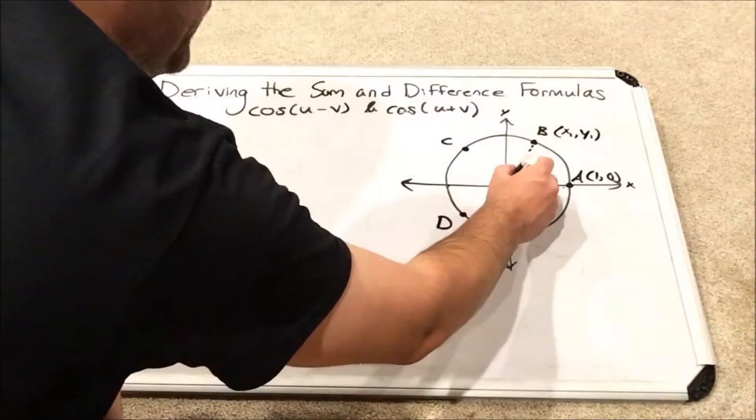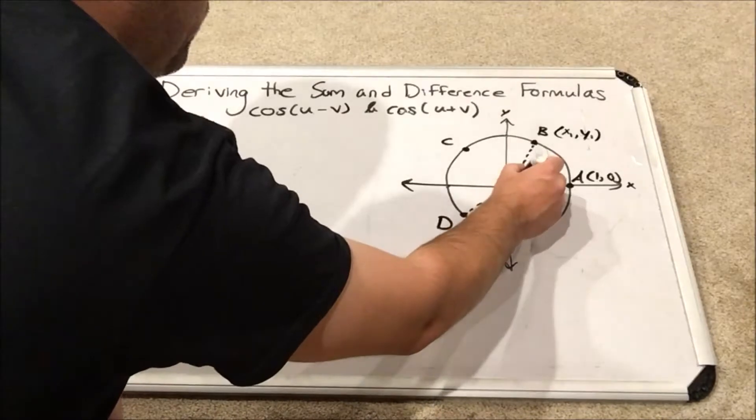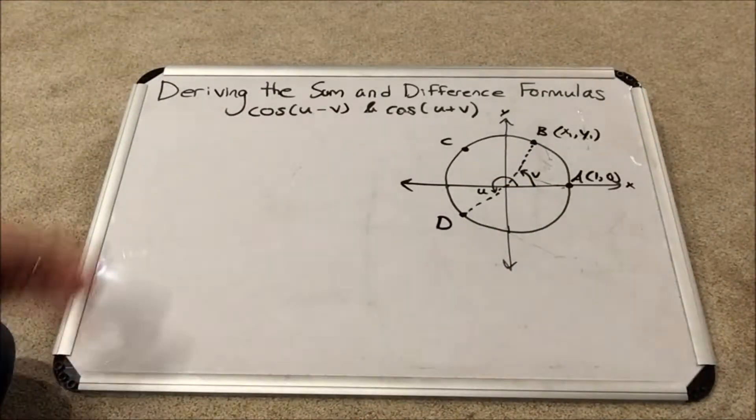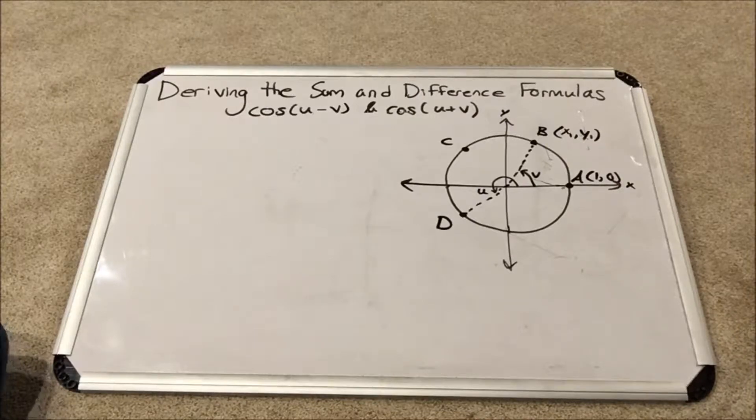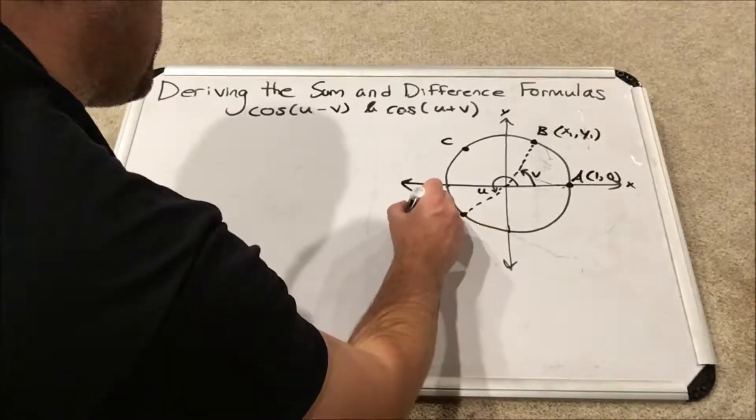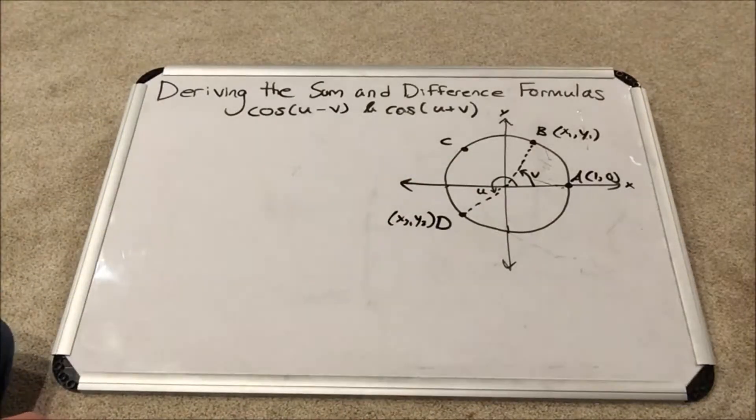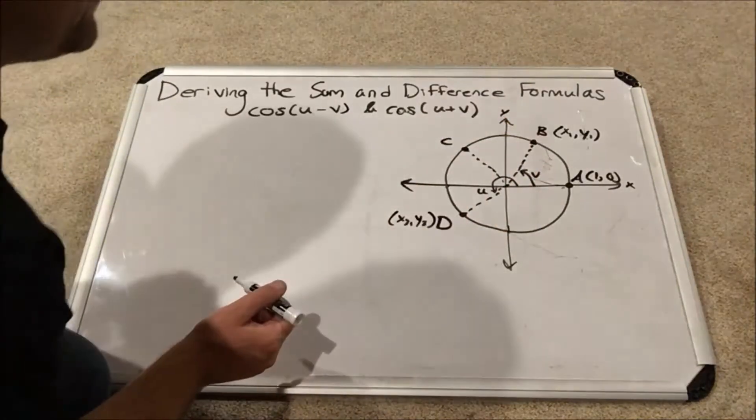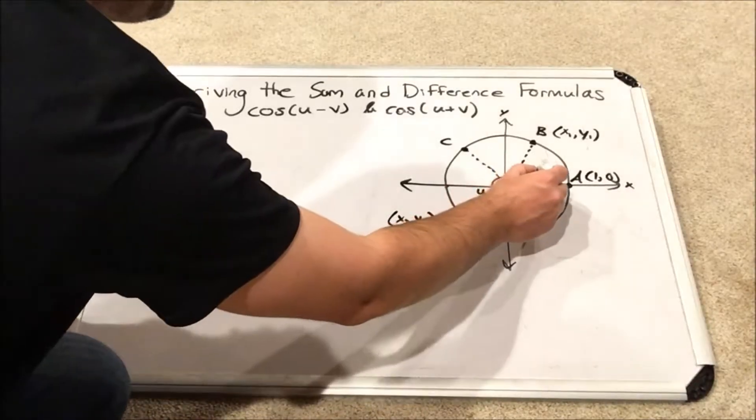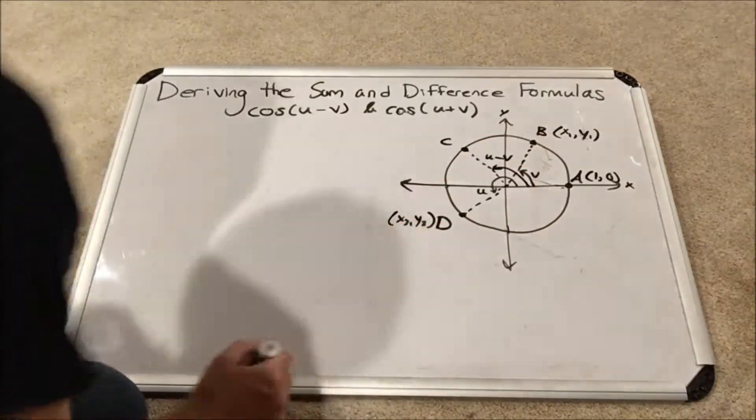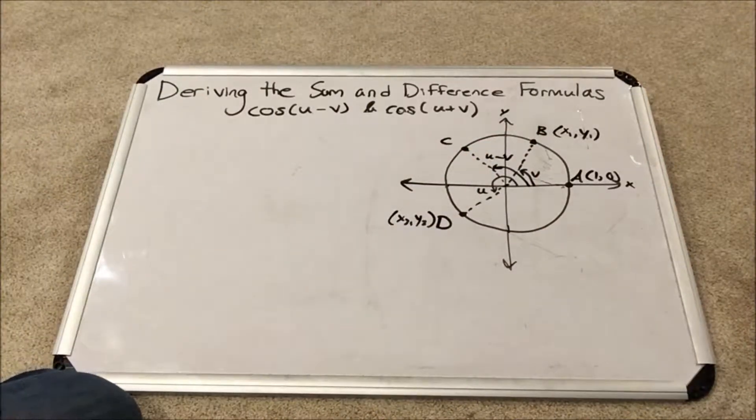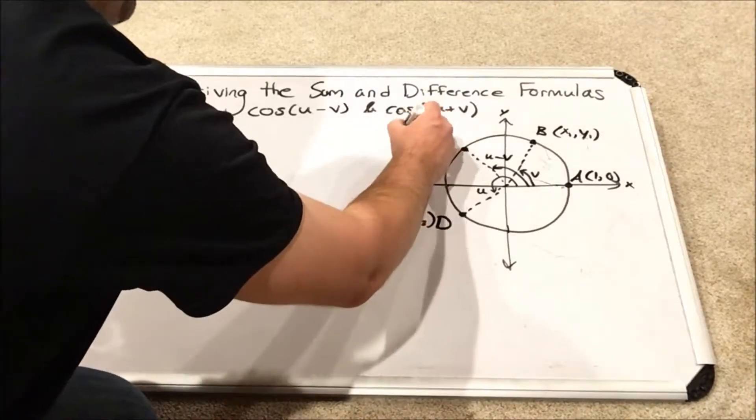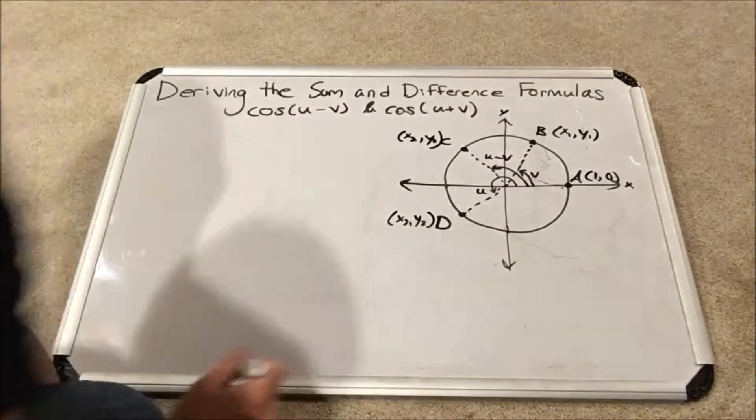Next, I'm going to come over here all the way to D, somewhere in the third quadrant. If I rotate all the way to D, I'm going to call that angle U. And these are the exact angles from the formula we're trying to derive. D, I'm going to give the coordinates x3 comma y3. That is where point C comes in. Point C is going to be the location of angle U minus V. See how it's less than U, but bigger than V. So that's where angle U minus V ends up. C has coordinates of x2 comma y2.